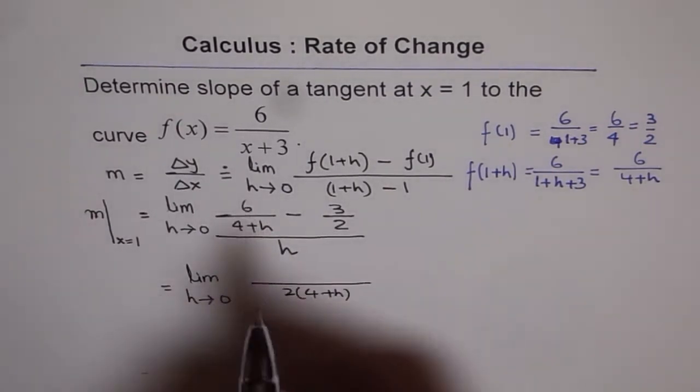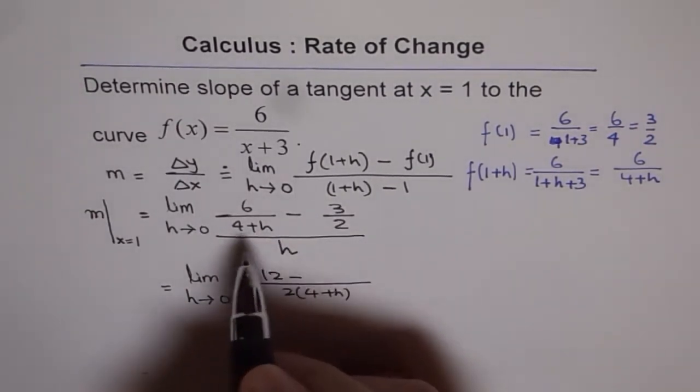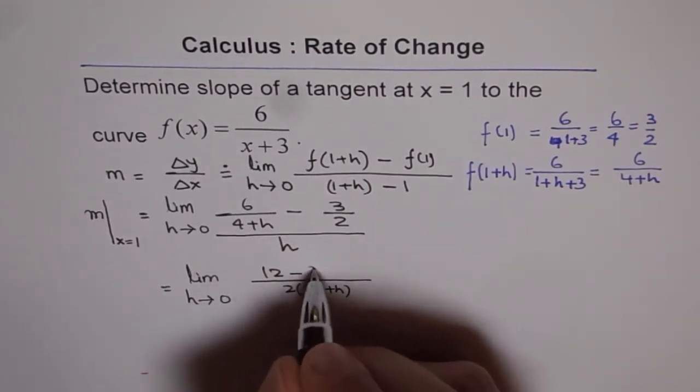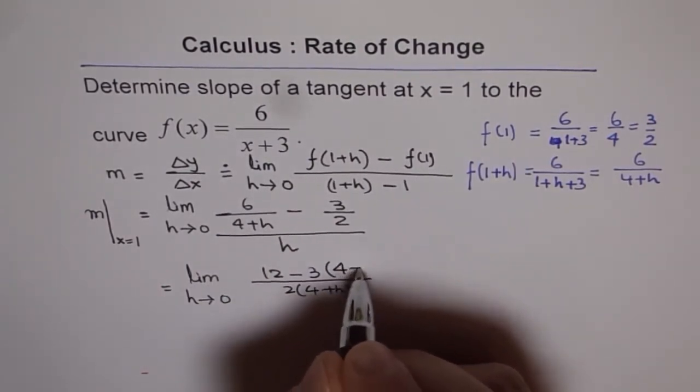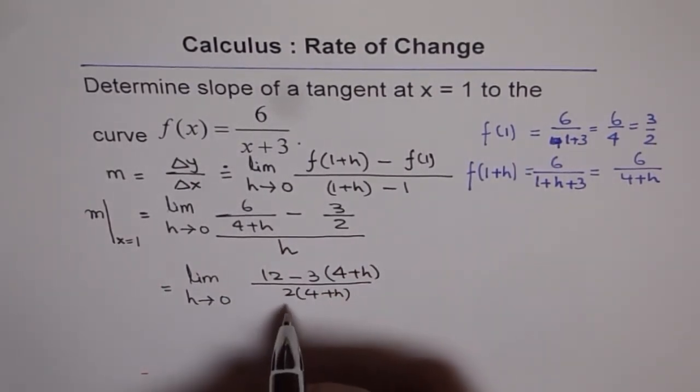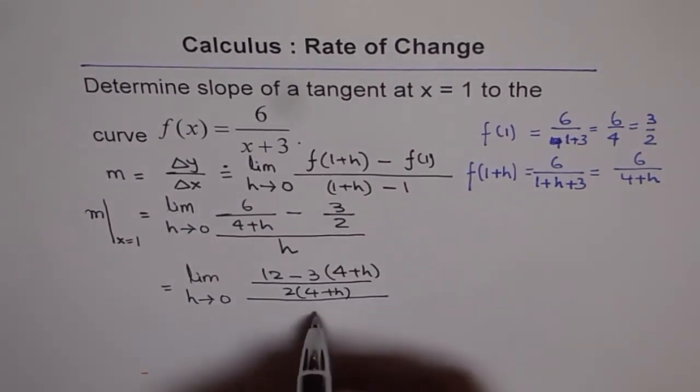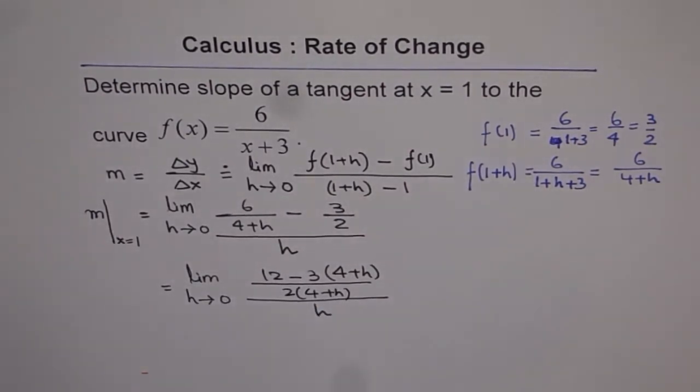So, 2 gets multiplied by 6 giving us 12 minus 3 gets multiplied by 4+h. So, let me first write 3 times (4+h). And then we have here over h. So, that is what simplifies to.